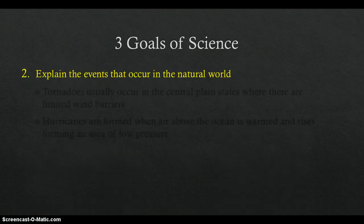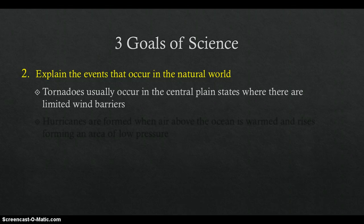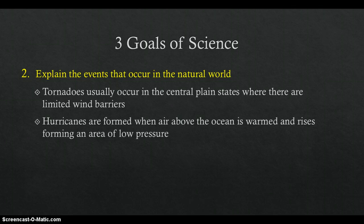The second goal is to explain the events that occur in the natural world. In order to explain these events, data must be analyzed and trends must be identified, such as tornadoes usually occur in the central plain states where there are limited wind barriers. Hurricanes are formed when air above the ocean is warmed and rises, forming an area of low pressure.